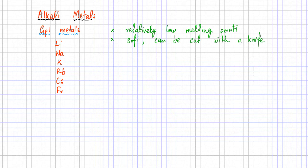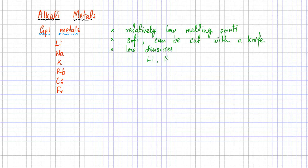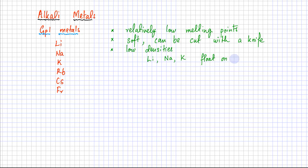The third property is that alkali metals have low densities — they are very light compared to other metals. For example, gold and lead are extremely heavy transition metals. But group 1 metals have very low densities. In particular, lithium, sodium, and potassium have a lower density than water, so if you put them in water, they are going to float on the surface.